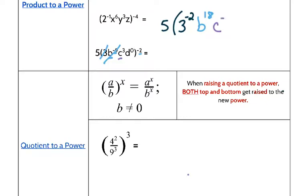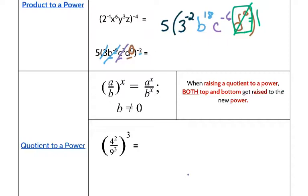D: I've got a 0 times a negative 2, which is 0. Now let's simplify — what do I know about anything raised to the 0 power? It equals 1. So we can just cross that off. If you have anything raised to the 0, make it a 1 or cross it off.